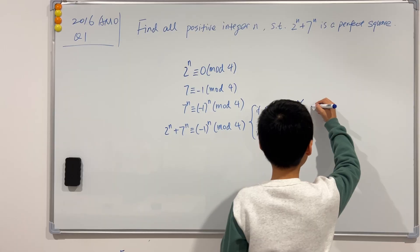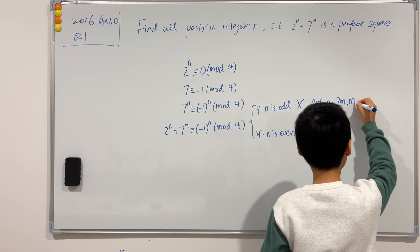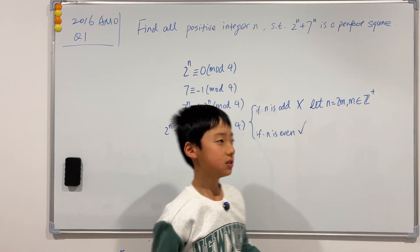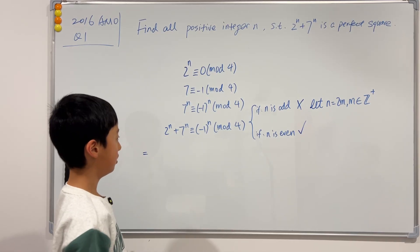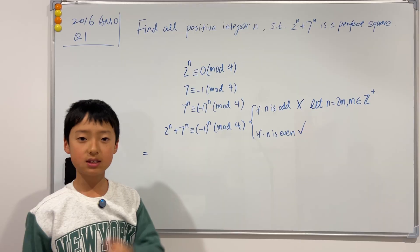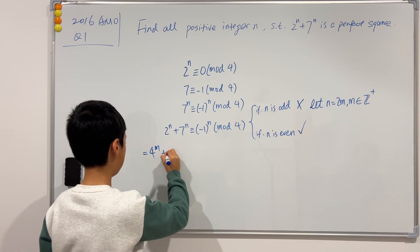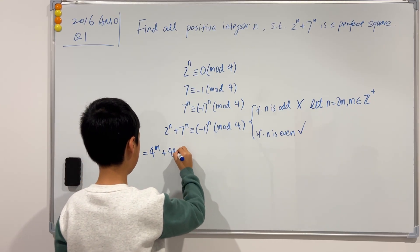So, this being said, can I just let n to be 2m, where m is a positive integer? Yes. So we can plug this into here. So this will be equal to 2 to the power of 2m is the same as 2 squared to the power of m, which is 4 to the m. And add 7 squared to the power of m. So 49 to the power of m.